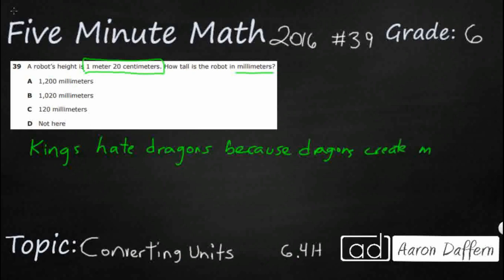And what helps is that our metric measurement system is based on tens, just like our place value system. So it's a base 10 system. So if we can remember the order of the prefixes, then it's just a matter of place value.